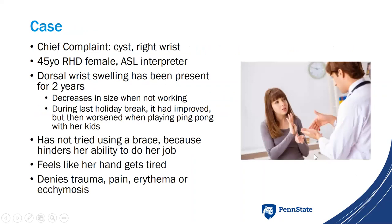We'll start with a short case. I saw a patient with a chief complaint of a cyst over her right wrist — a 45-year-old right-hand dominant female who works as an ASL interpreter. She's had swelling on the top of her wrist for about two years. It gets bigger when she's working more, smaller when she's not working. Acutely, it had gotten better but then worsened after playing ping pong. She denies trauma, pain, erythema, or ecchymosis.